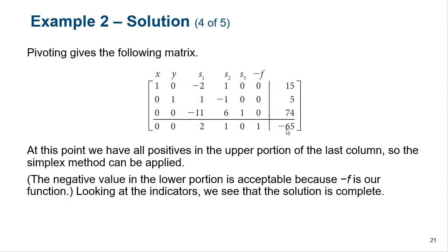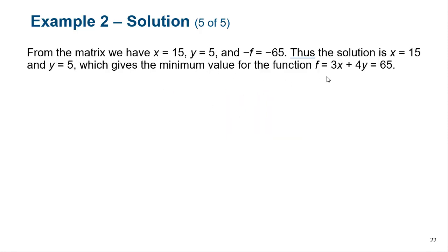The simplex method can now be applied. The negative 65 here is fine because remember we're doing a negative F — negative F equaling negative 65 really means that F equals 65. We can see from the indicators that the solution is complete because we don't have any negatives left to deal with. S1 and S2 are zeros; the third slack variable is 74; X equals 15 and Y equals 5. Thus the minimum value of the function occurs at X equals 15, Y equals 5, giving a minimum of 65.